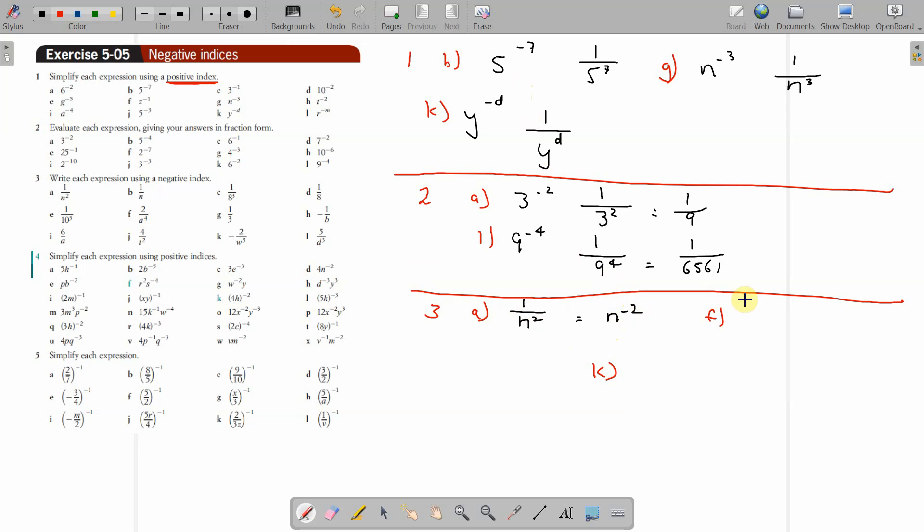Okay, 3a: 1 over n squared equals n to the negative 2. If you look, that's the reverse of what's happening back here in question 1. That's reciprocal of that and back in the negative indice. Part f: 2 over a to the 4. Well, the first part, the negative indice part, is a to the negative 4. That covers that, but it's 2 times that.